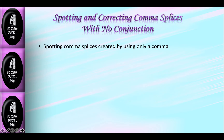To spot comma splices that are created by using only a comma, locate each comma in the paper. Ask yourself: could everything in that sentence to the left of that comma stand alone as a complete sentence? If the answer is yes, then ask yourself: could everything in that sentence to the right of that comma stand alone as a complete sentence? If the answer to both questions is yes, that sentence is a comma splice.